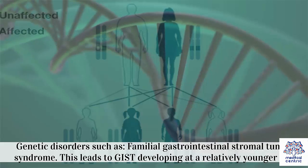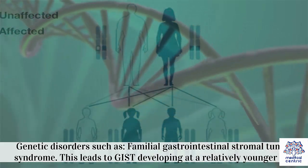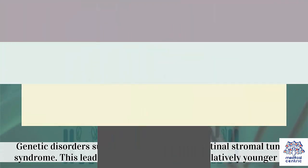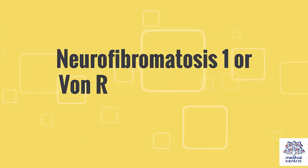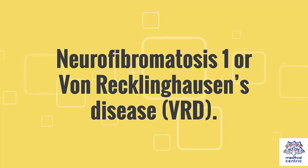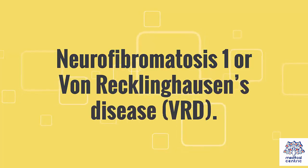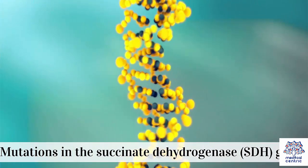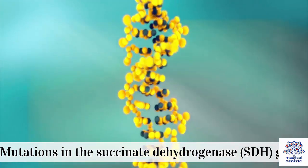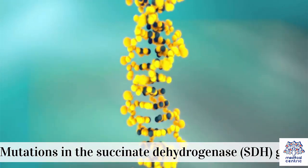Familial gastrointestinal stromal tumor syndrome leads to GIST developing at a relatively younger age. Neurofibromatosis 1, or von Recklinghausen's disease, also known as VRD. Mutations in the succinate dehydrogenase, or SDH genes.